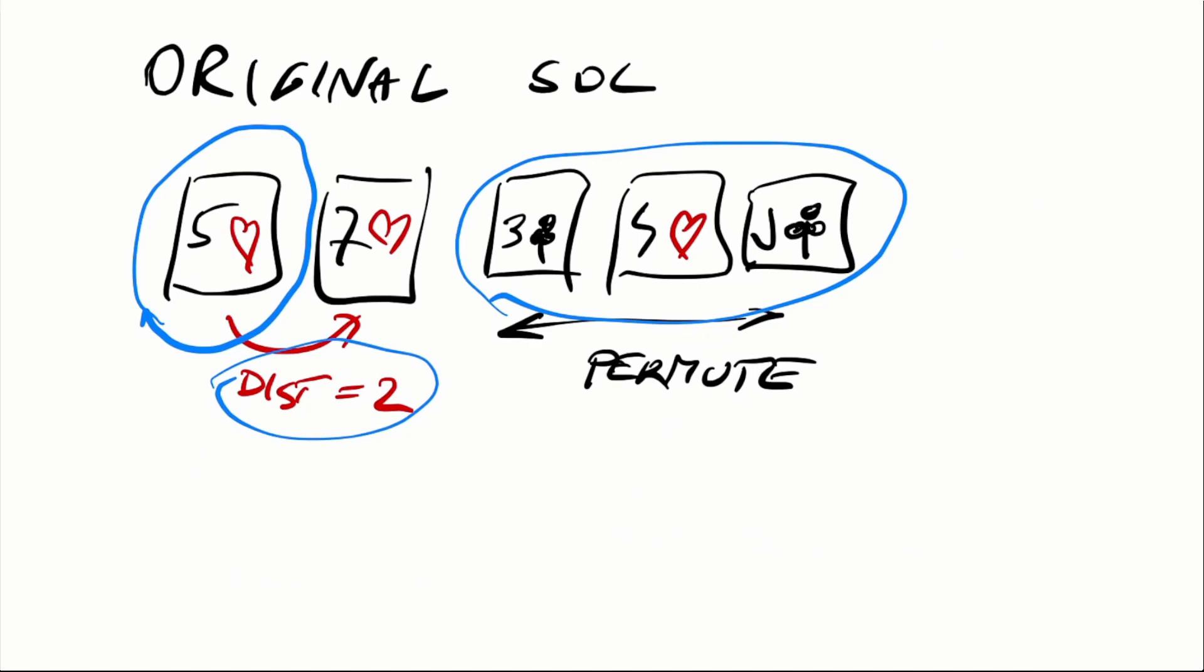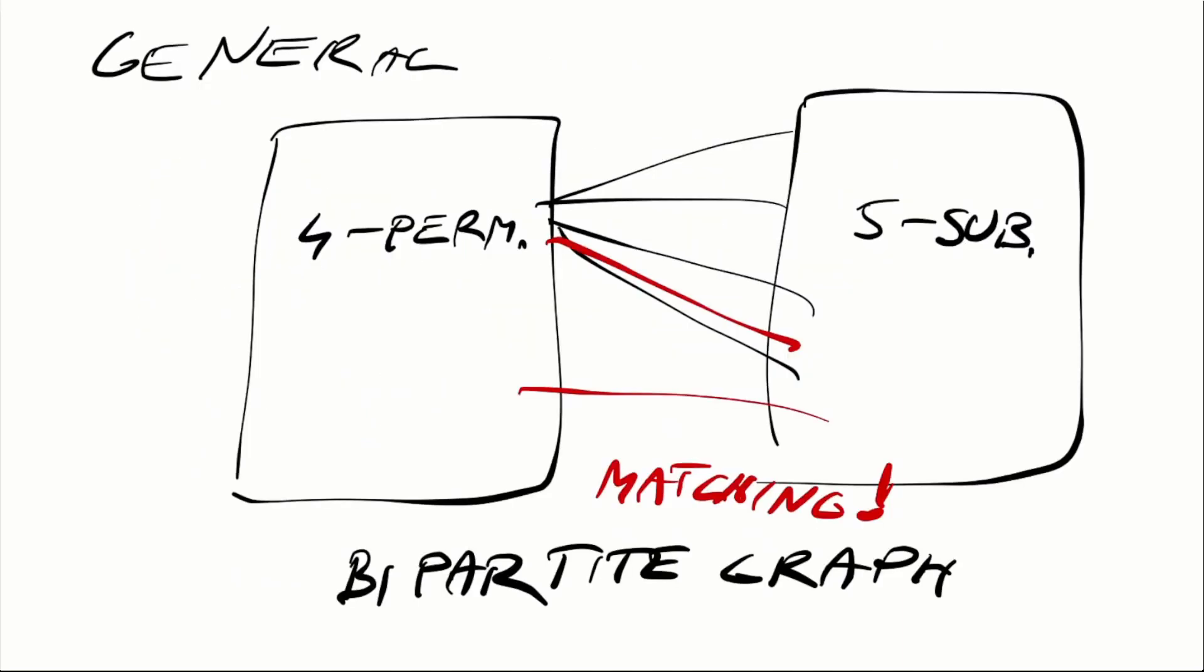But this is not optimal. We could perform the same trick with a bigger deck of cards. What is the limit? To find the limit we have to think about the problem in terms of combinatorial structures.